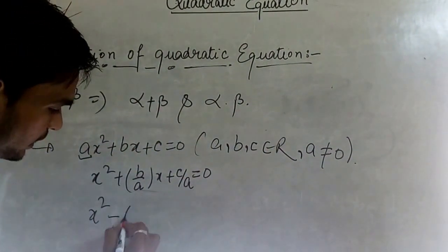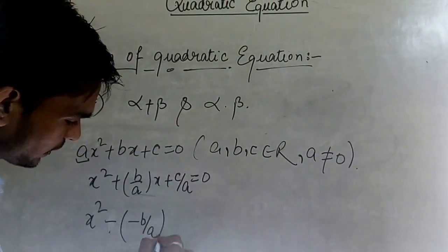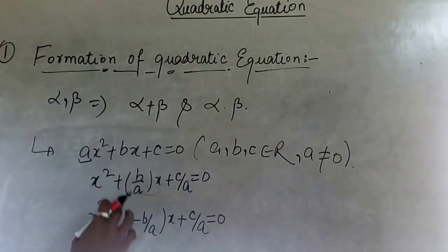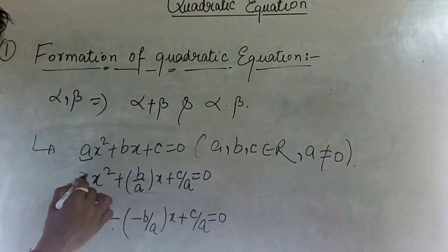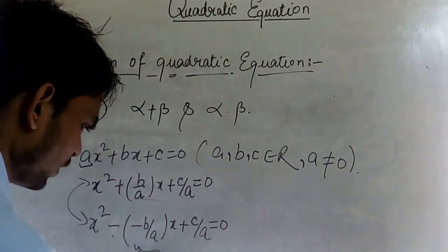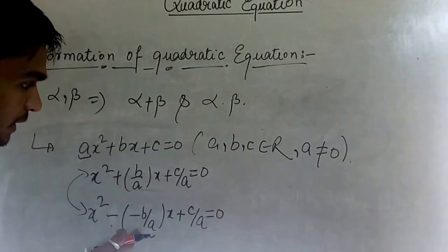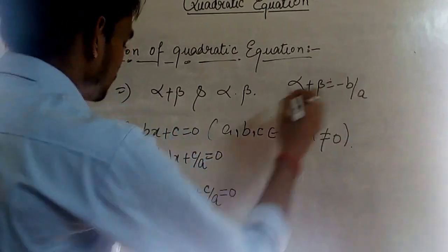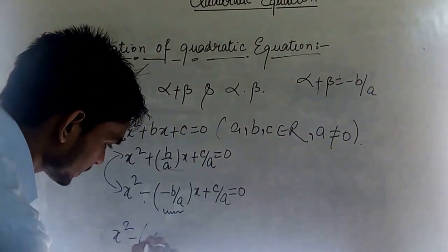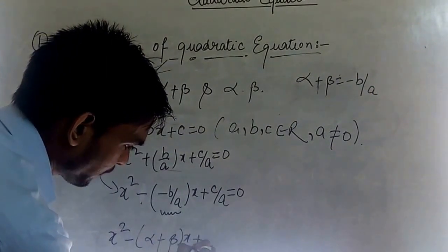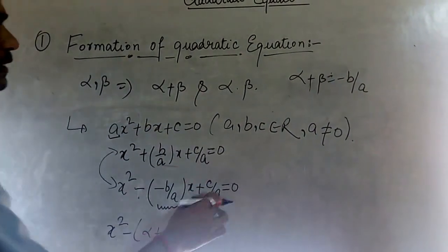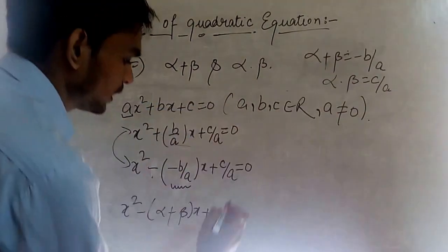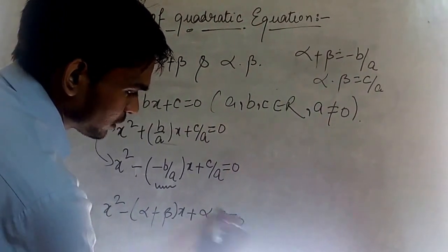Taking the minus sign, we can rewrite this as x² − (b/a)x + (c/a) = 0. Since minus times minus equals plus, these two equations are the same. Now, what is the value of −b/a? It is alpha plus beta. So alpha + beta = −b/a. And from the previous lecture, we know that c/a = alpha × beta.